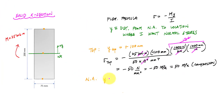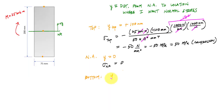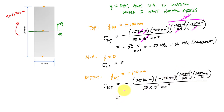At the neutral axis, Y equals zero, so the normal stress there is just zero. At the bottom, Y is negative 100 millimeters, and the normal stress works out to positive 50 megapascals — that's 50 MPa in tension. So the cross section experiences compression above the neutral axis and tension everywhere below the neutral axis.